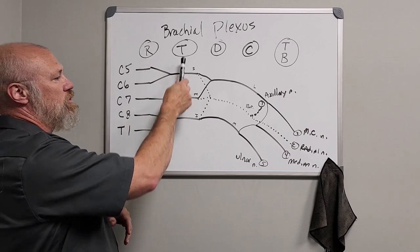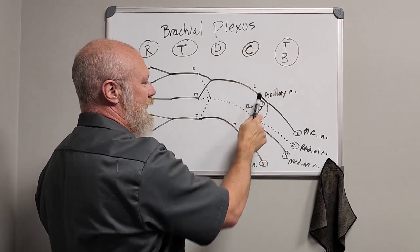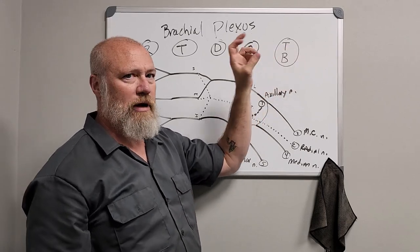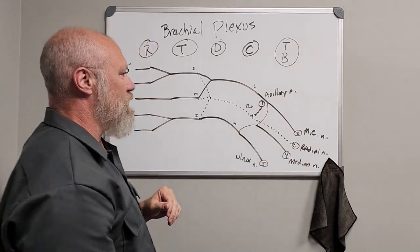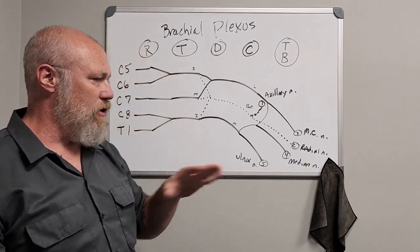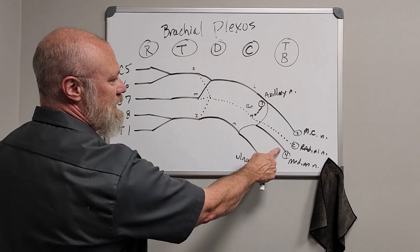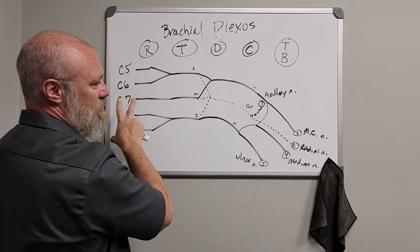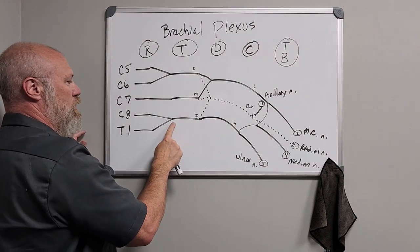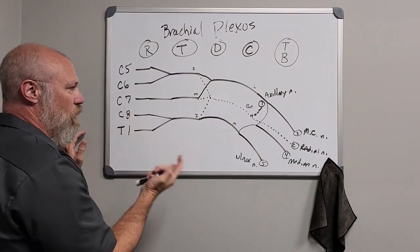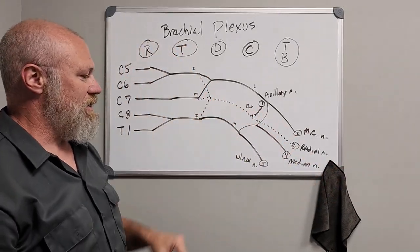That's the brachial plexus. Practice drawing it — roots to trunks (superior, middle, inferior), then divisions (anterior and posterior), which form the lateral, medial, and posterior cords, which terminate in the named branches supplying the entire upper extremity. In a clinical or neuro class you'll need to trace contributing cord levels back. The median nerve has input from nearly the entire plexus, while the ulnar nerve traces back through the medial cord, anterior division, inferior trunk — really only C8 and T1.